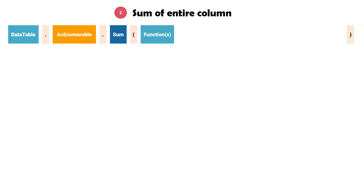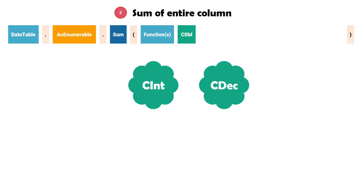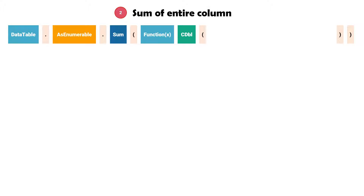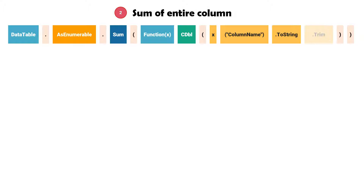For this we add a function, and inside that function we add a variable, for example x. After this you have to add a function to convert the output into number format, for example cdbl. This function gets the content of the cells in double format and gives it out in double format. We can also use other number formats like integer or decimal. After this we define the column which contains the numbers we want to sum, using variable x and then the column name. We can also use the column index instead of the column name. After this we set the functions toString and Trim. This is the statement to sum the entire column from a data table.